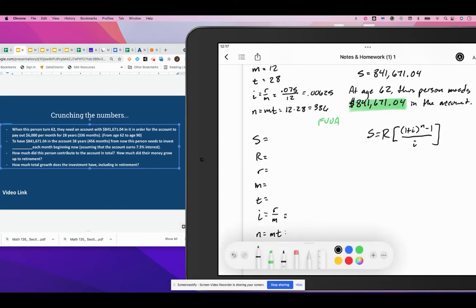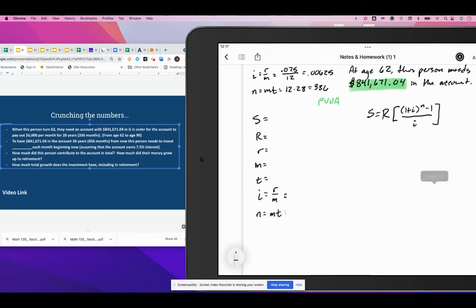And so this person has 38 years to save, to invest money and watch it grow. And we're going to figure out what the monthly payment they're going to need to make in order to reach their goal is going to be. So we know that we want a total in the account of $841,671.04. We don't know how much they're going to need to put away monthly now to make that happen.